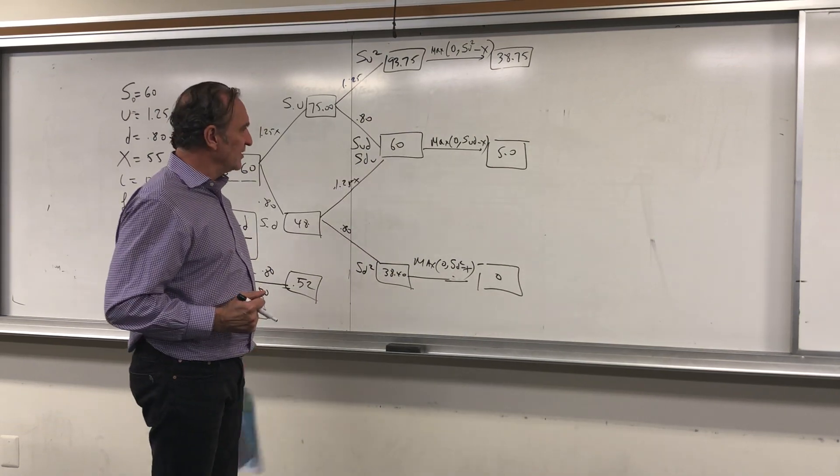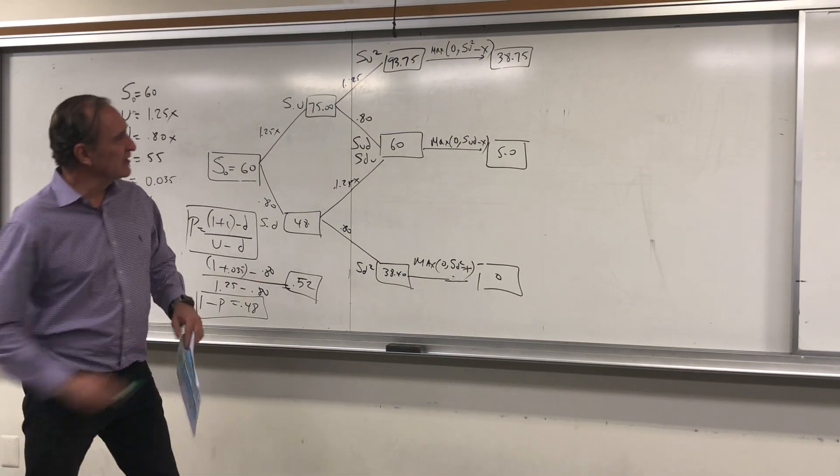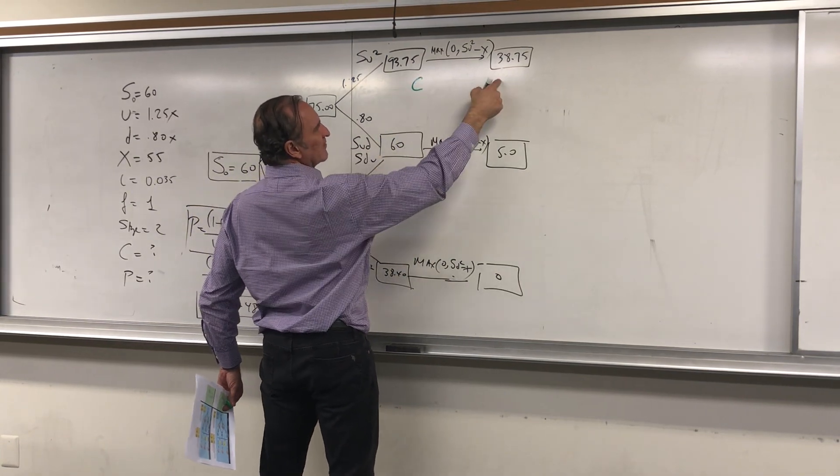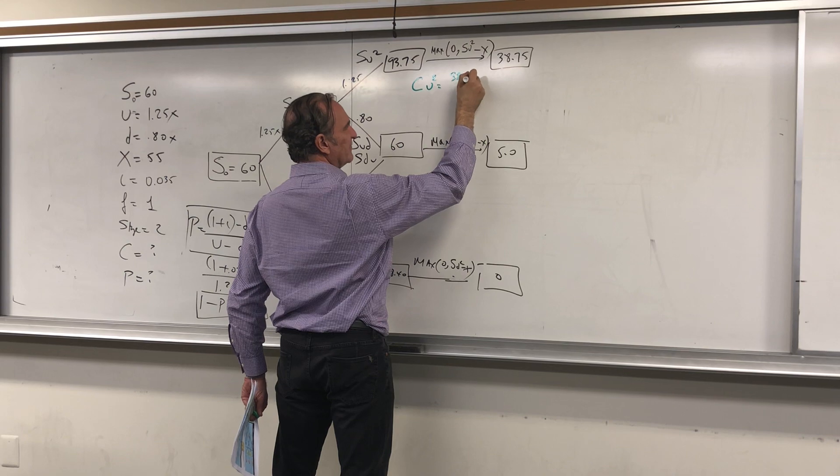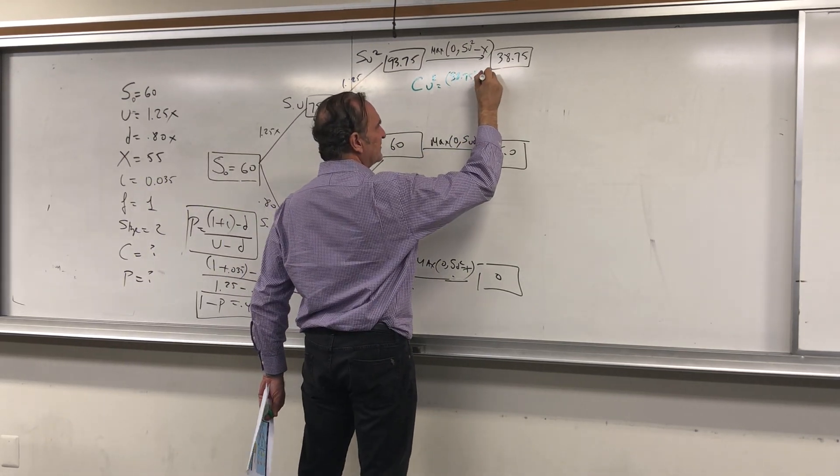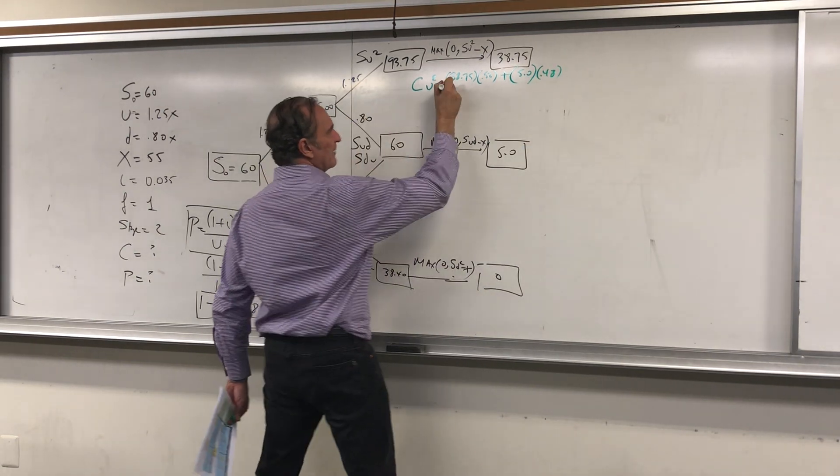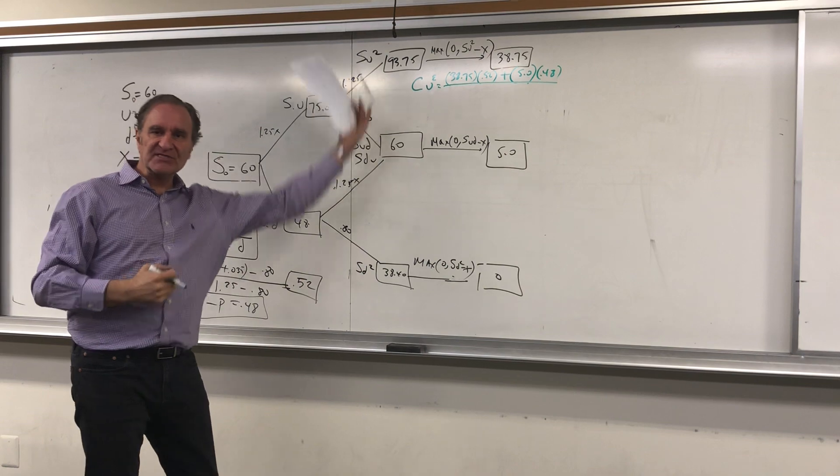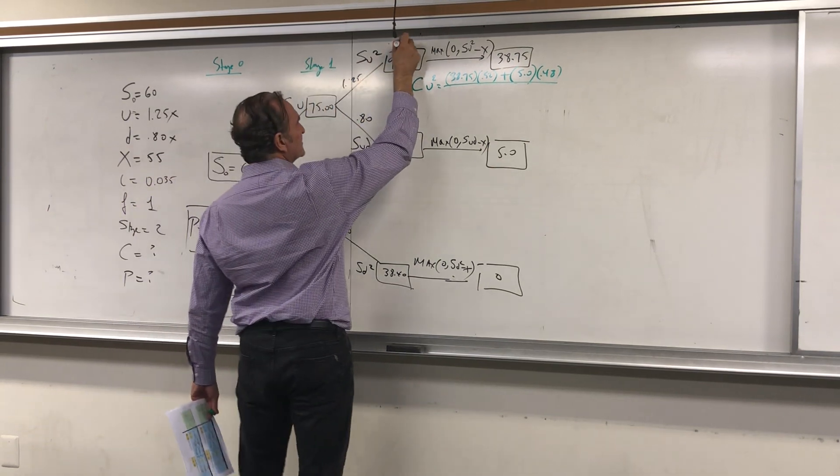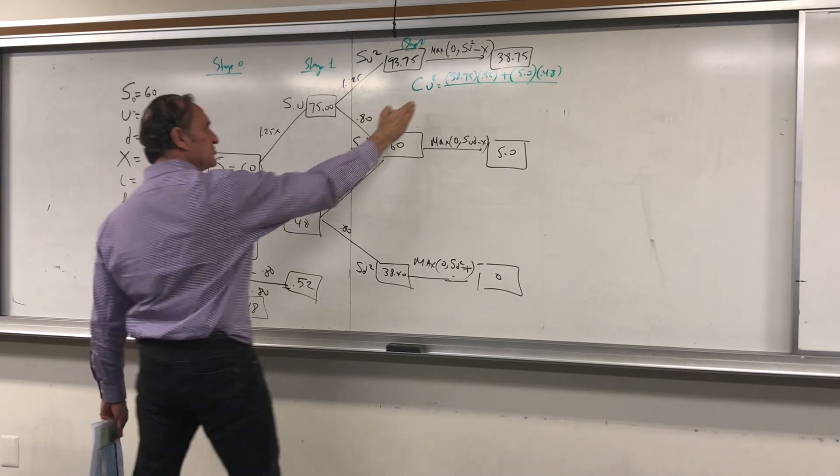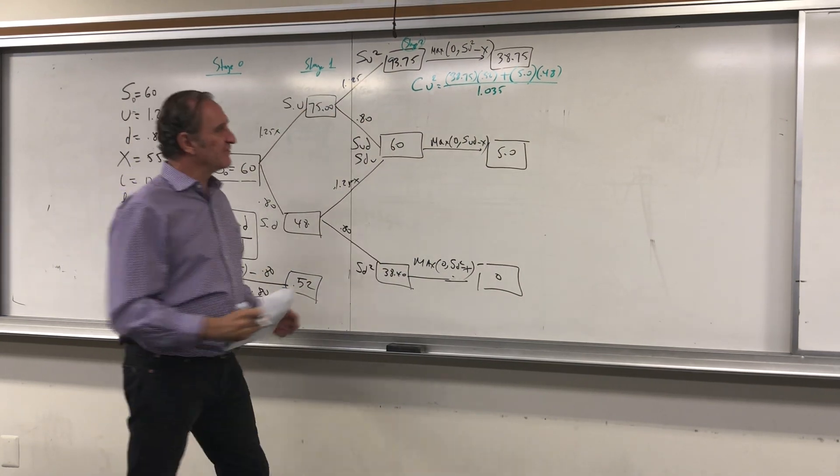Now I'm going to use a different pen to calculate the possibilities. We have the call option, right? We're trying to get call option at stage two. C_uu is 38.75 times 52% (there's a 52% chance we're going to get that) plus 5 times 48%. But we're going to present value it back one period to get it to this stage. Remember, this is stage zero, this is stage one, and this is stage two. So at stage two, I have to bring it to stage one, divided by 1.035 (which is 1 + 0.035). I did the calculation and I got $21.86.